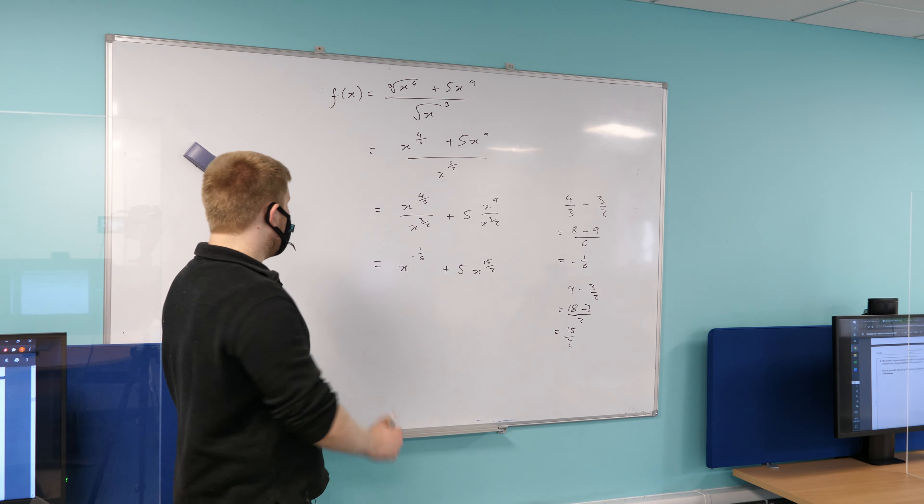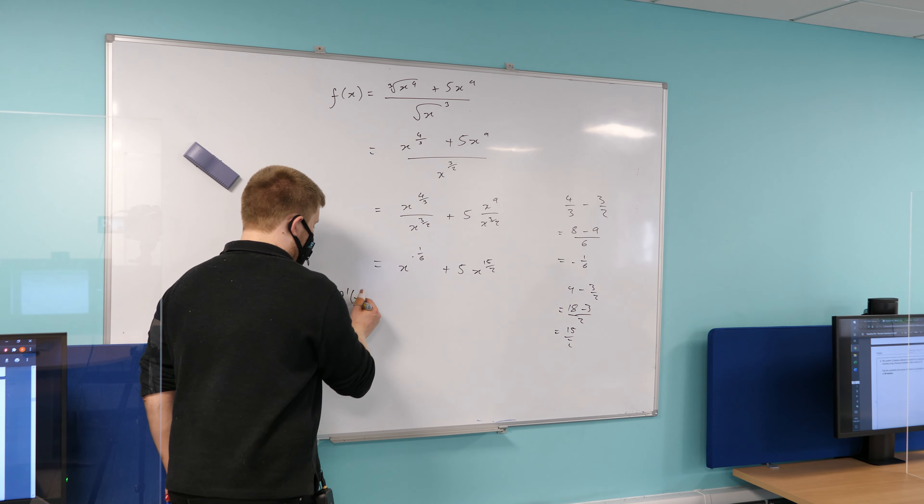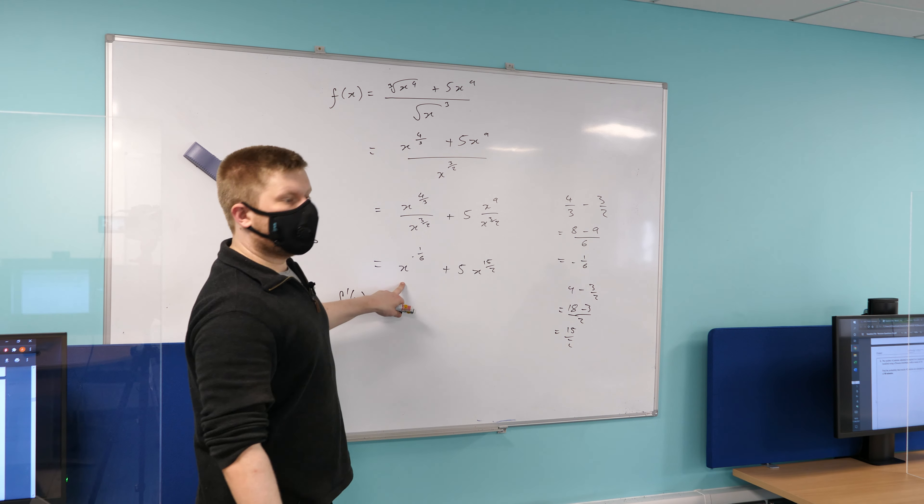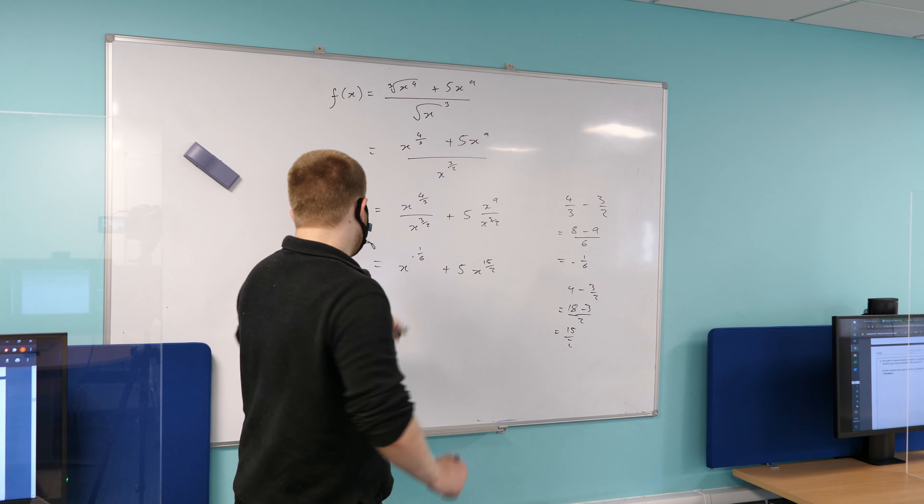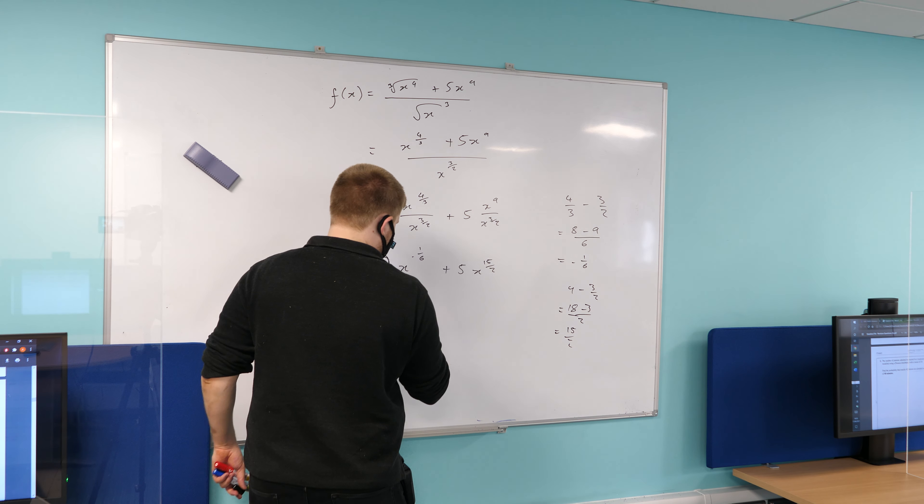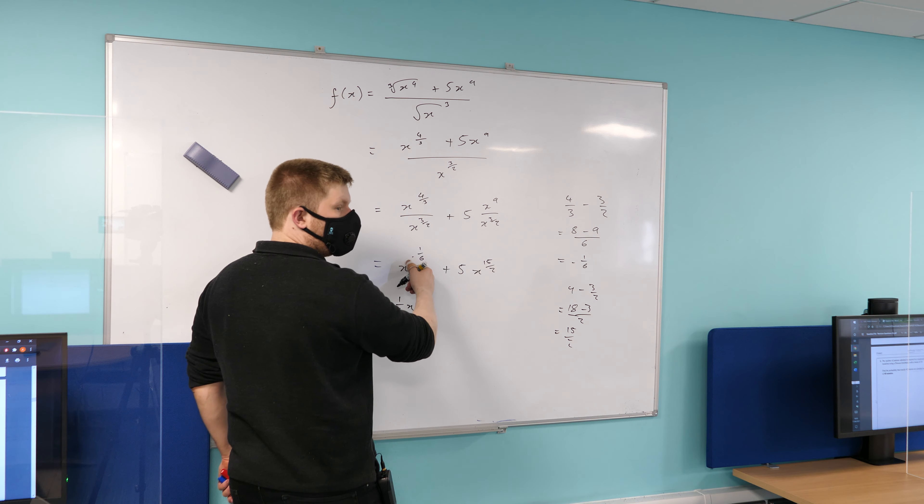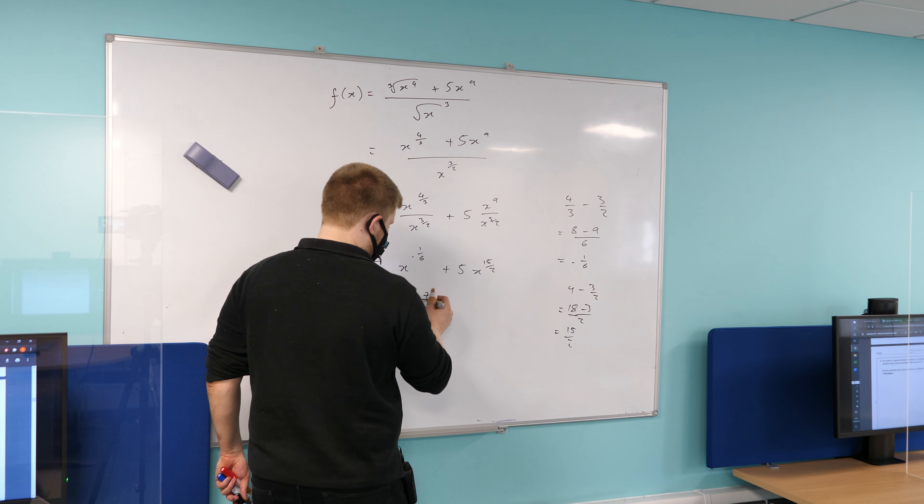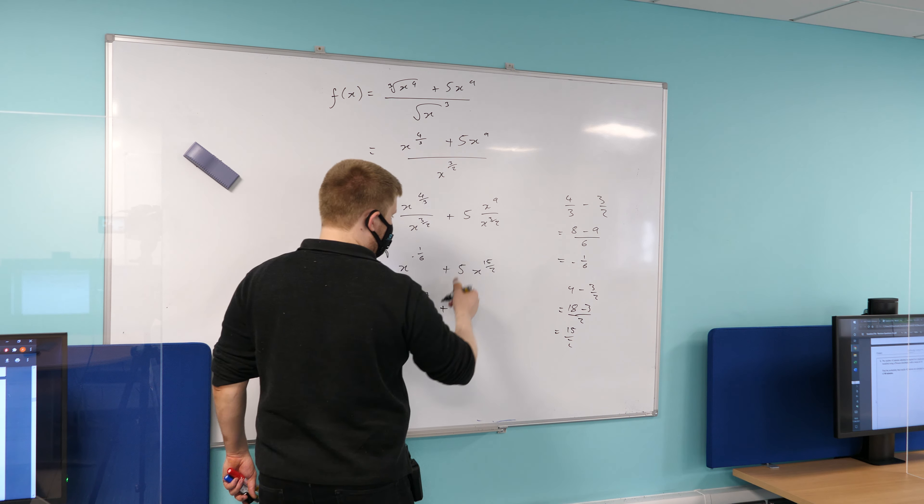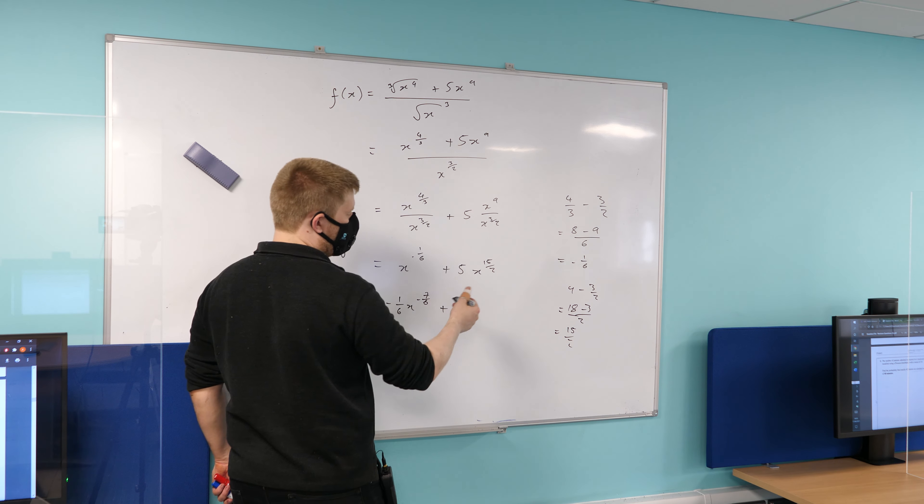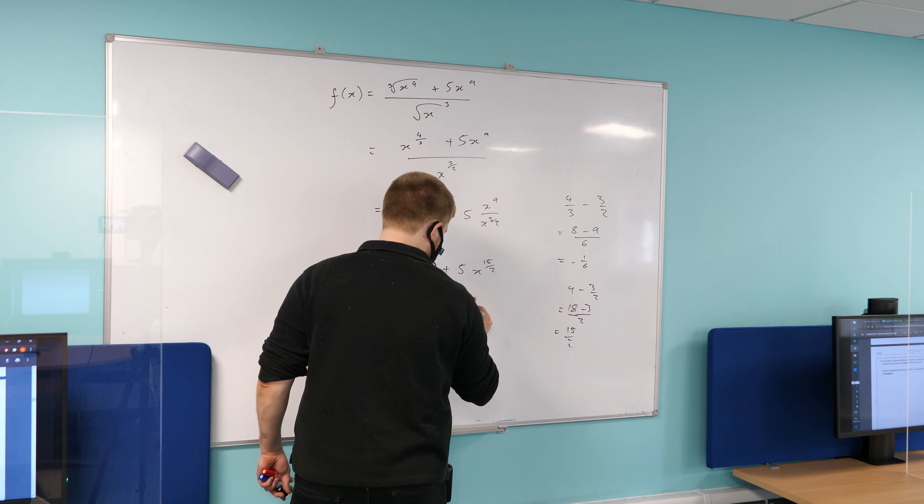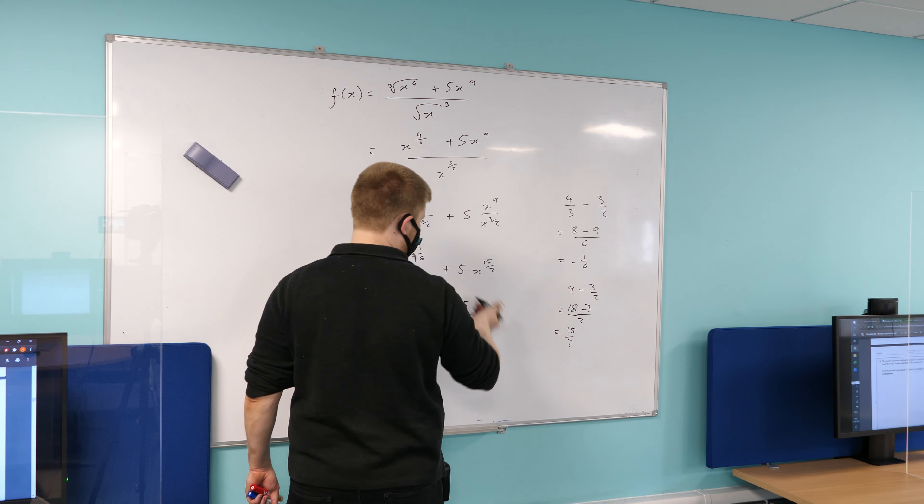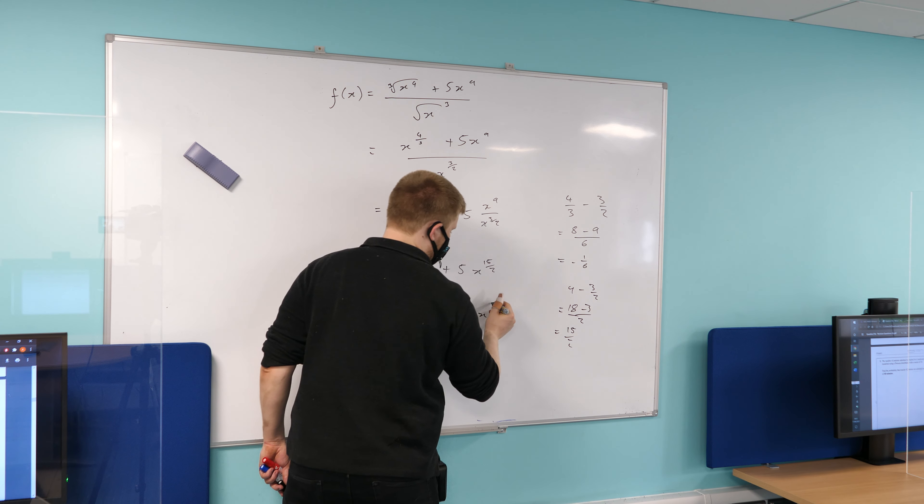And then from here, if I want to differentiate this, so I want to find f prime of x, just use the power rule. So bring the power down, reduce the power by 1. So it's going to become negative one sixth, x to the power of, reduce it by 1, minus 7 divided by 6. Good, well done. Plus, again, bring the power down. Well, 15 times 5 divided by 2. 75 over 2? Yeah. x to the power of, and then reduce the power by 1. 13 divided by 2. Good.